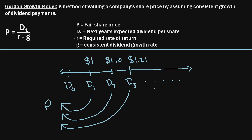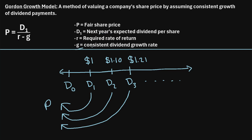It turns out that when you calculate it, this is the formula that can be used to actually calculate P: D sub 1 divided by R minus G, where D sub 1 is next year's expected dividend, R is the required rate of return, and G is the consistent dividend growth rate each year.